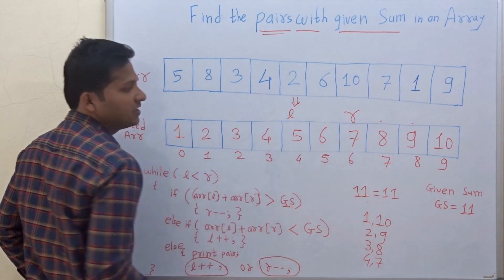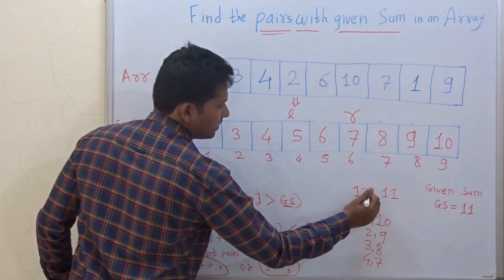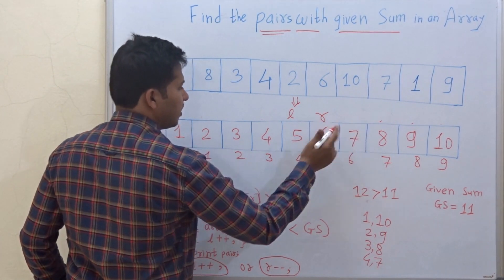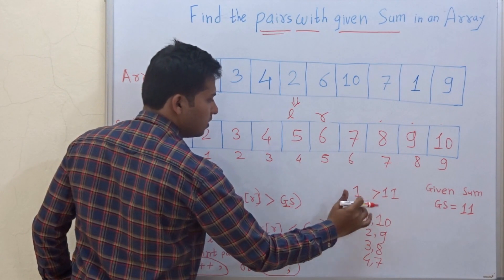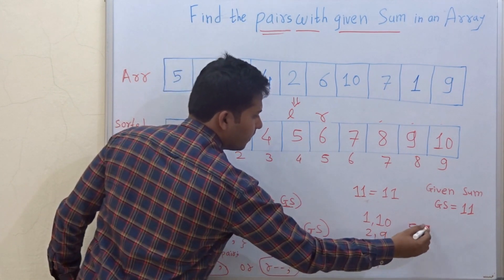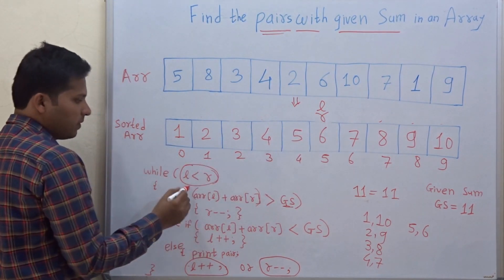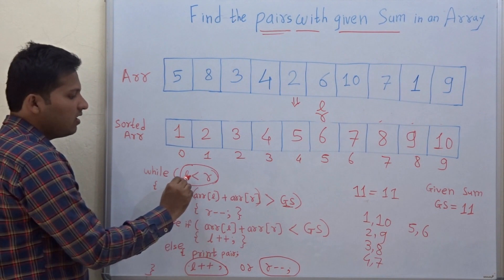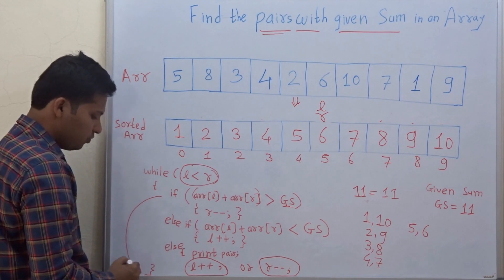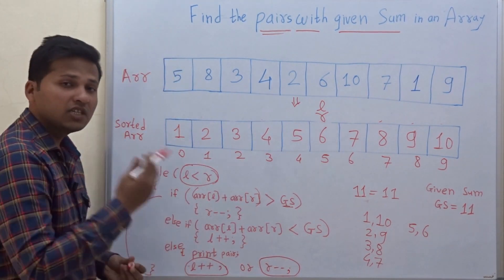Now 5 plus 7 is 12, which is greater than 11, so we decrement R. Then 5 plus 6 is 11, which is equal to the given sum, so this is the pair: 5, 6. L then increments, but now L is equal to R, so the while loop condition L less than R is not satisfied and we exit the loop. So this is the way we find all the pairs in an array with the given sum.